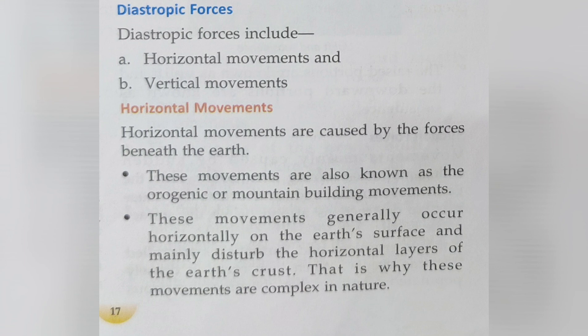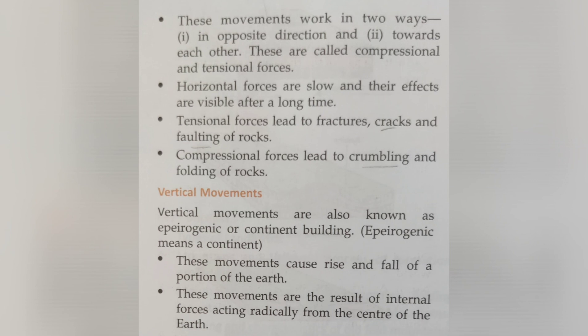Horizontal movements are caused by the forces beneath the Earth. These movements are also known as orogenic or mountain-building movements, because it is due to these forces that mountains are built. These movements generally occur horizontally on the Earth's surface and mainly disturb the horizontal layers of the Earth's crust — that is why these movements are complex in nature. These movements work in two ways: in the opposite direction, and towards each other. These are called compressional and tensional forces. Horizontal forces are very slow, and their effects are visible only after a long time.